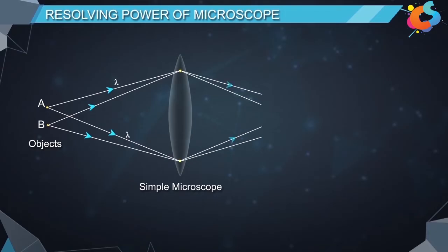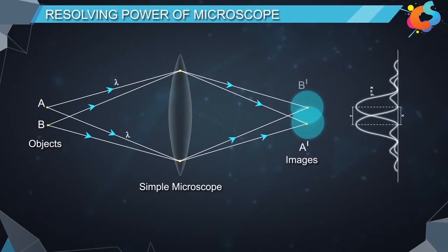Let lambda be the wavelength of light used to observe the objects. The objects form diffraction images A' and B' as shown in the figure.